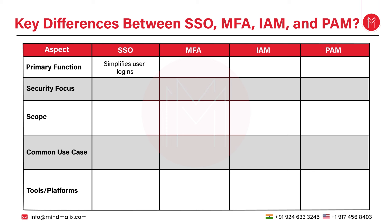MFA's primary function is to enhance authentication security by requiring multiple methods to verify a user's identity. Instead of relying solely on passwords, MFA combines different authentication factors to strengthen security. For example, a typical MFA login process might involve entering a password and then inputting a code sent to your phone.